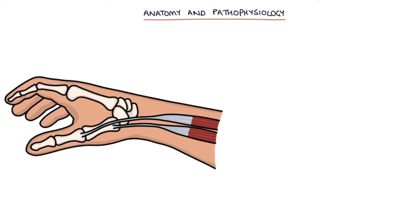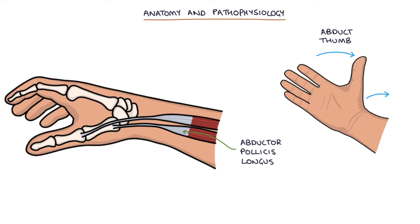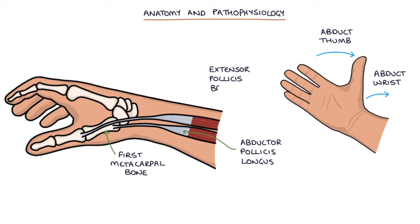Let's talk about the basic anatomy and pathophysiology. The abductor pollicis longus acts to abduct the thumb and abduct the wrist. The tendon inserts into the base of the first metacarpal bone at the base of the thumb. The extensor pollicis brevis also acts to abduct the thumb and abduct the wrist, and its tendon inserts into the base of the proximal phalanx of the thumb.